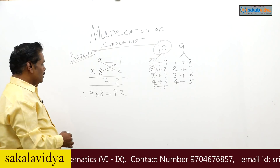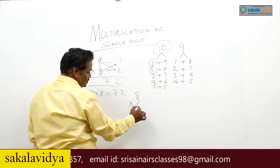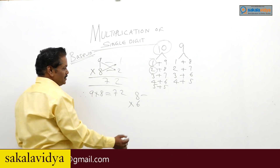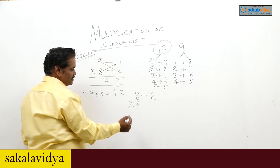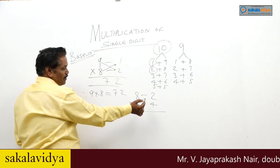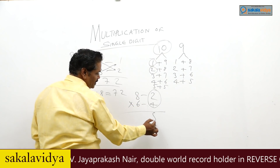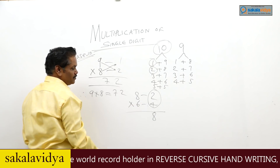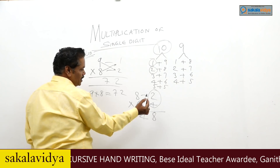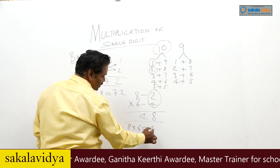Let us see one more example: 8 into 6. Complement of 8 is 2, complement of 6 is 4. Same way, multiply 2 into 4, that is 8. From 8 subtract 4: 8 minus 4 is 4, or 6 minus 2 is 4. So 8 into 6 is 48.